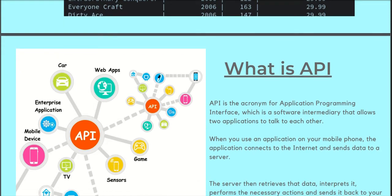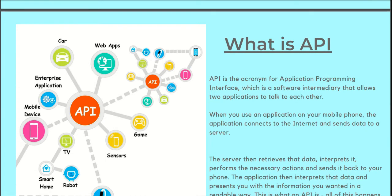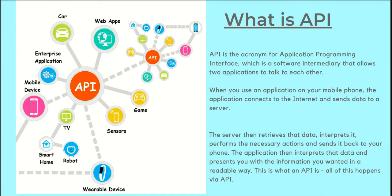An API — Application Programming Interface — is software that allows two applications to talk to each other. A back-end developer must know what an API is. For this project, the back-end developer had already designed the database and the API. The front-end developer and the back-end developer are two different people on the project. What the front-end developer asked for was the API and the API documentation, so they would know how to integrate everything together and where to implement each connection.